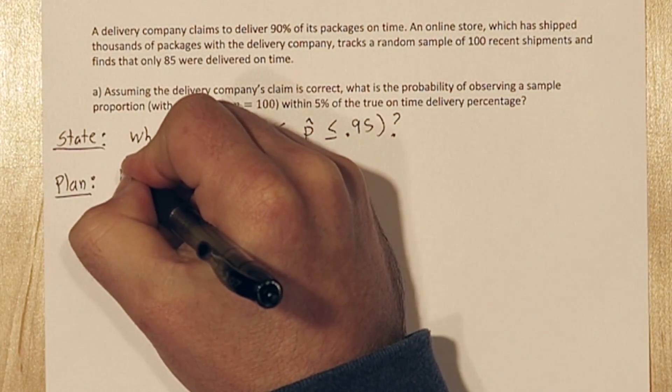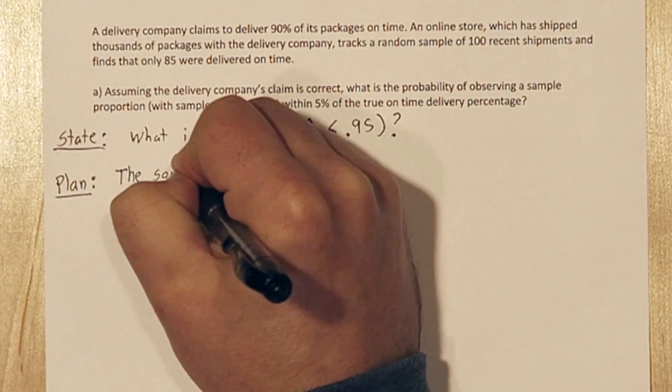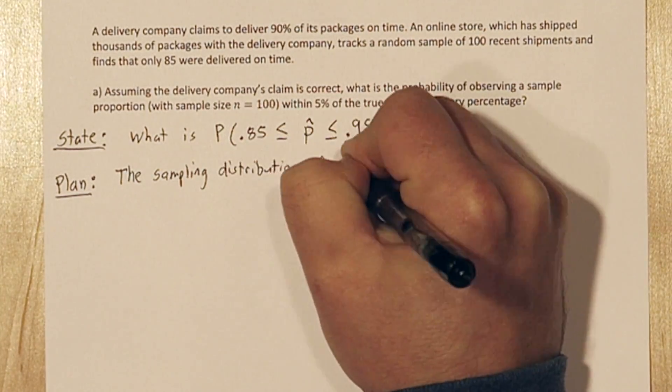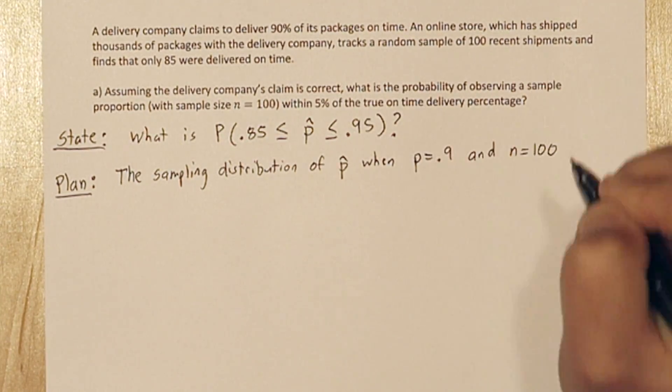Our plan is to first list what we know about the sampling distribution of p hat when the parameter value is 0.9 and our sample size is 100.